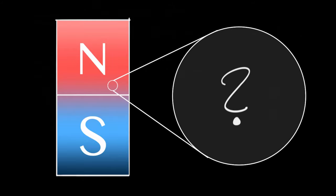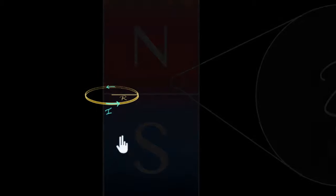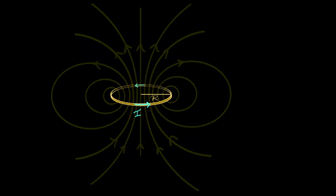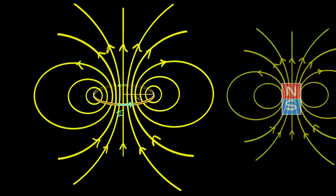Electric fields come from charges, but where do magnetic fields come from? What's inside a magnet that generates a magnetic field? Let's find out. Let's start with something that we already know: a current carrying loop generates its own magnetic field. And if you draw the field lines, you will see that these field lines resemble that of a bar magnet.